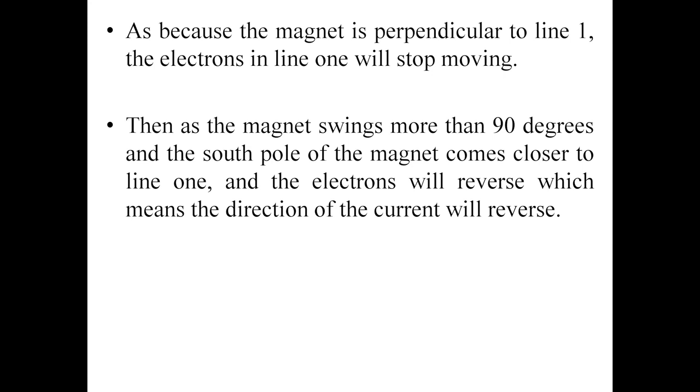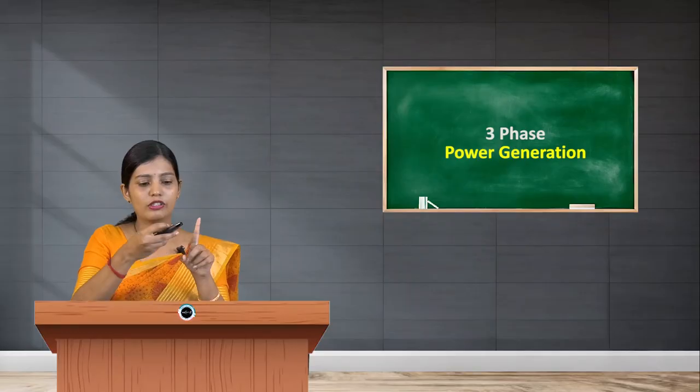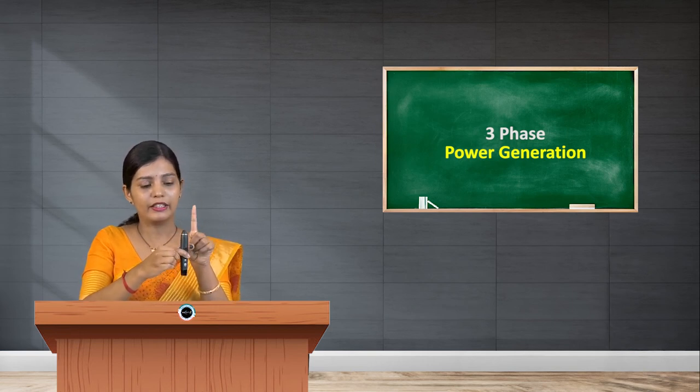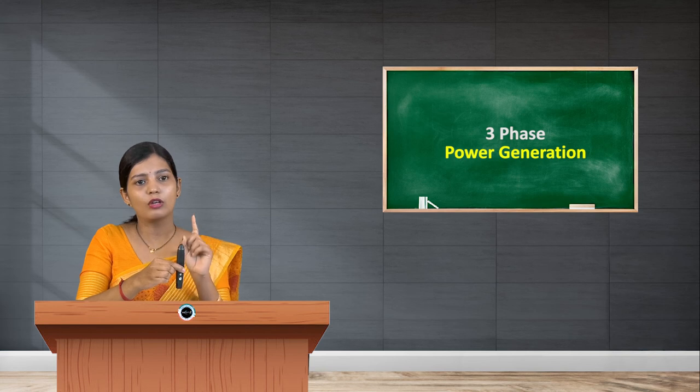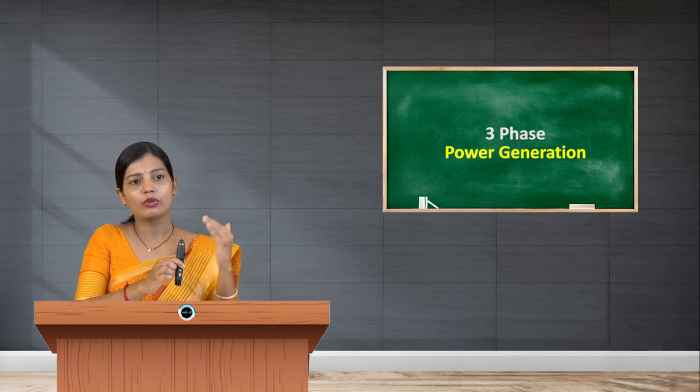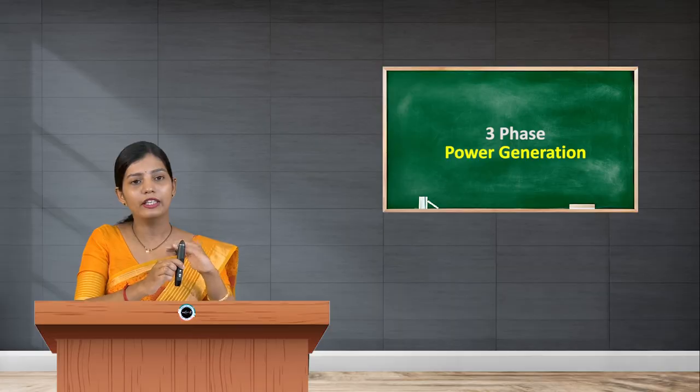Then, as the magnet swings more than 90 degrees and the south pole comes closer to Line 1, electrons will reverse, meaning the direction of current will reverse. This started moving—this is south pole and this is the conductor. We indicated south pole as negative and electrons are also negative. So negative and negative will start repelling. In this way, the electrons will move in reverse direction and you will have a reverse current.